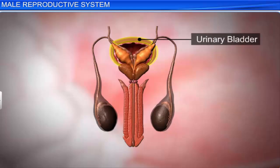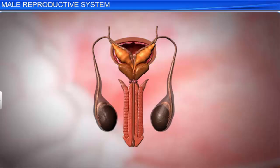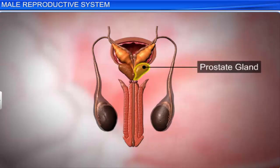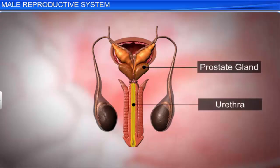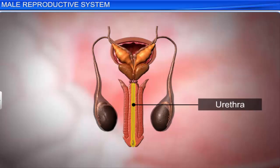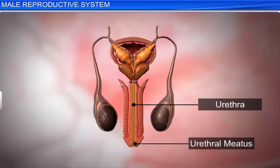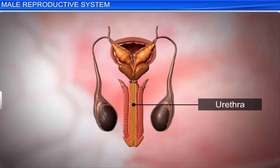The neck of the urinary bladder, ejaculatory duct, and prostate gland open into the urethra, or urinogenital canal. The urethra extends through the penis to its external opening called the urethral meatus, or urinogenital aperture. The urethra is the common passage for urine and semen.